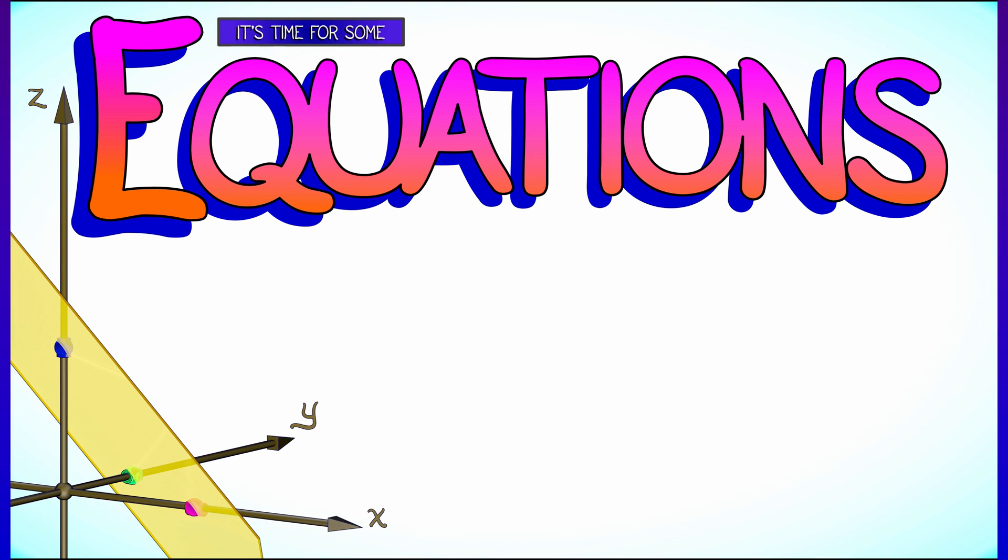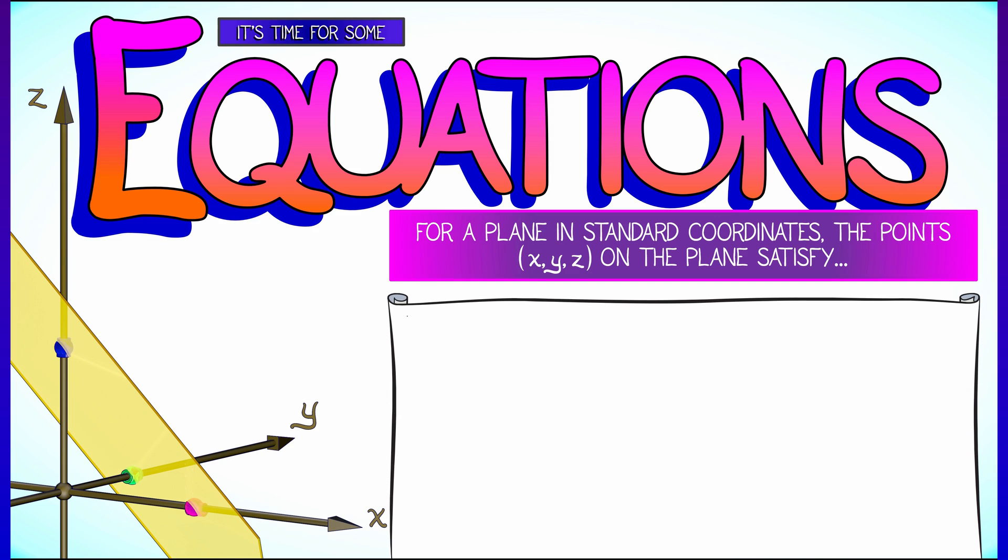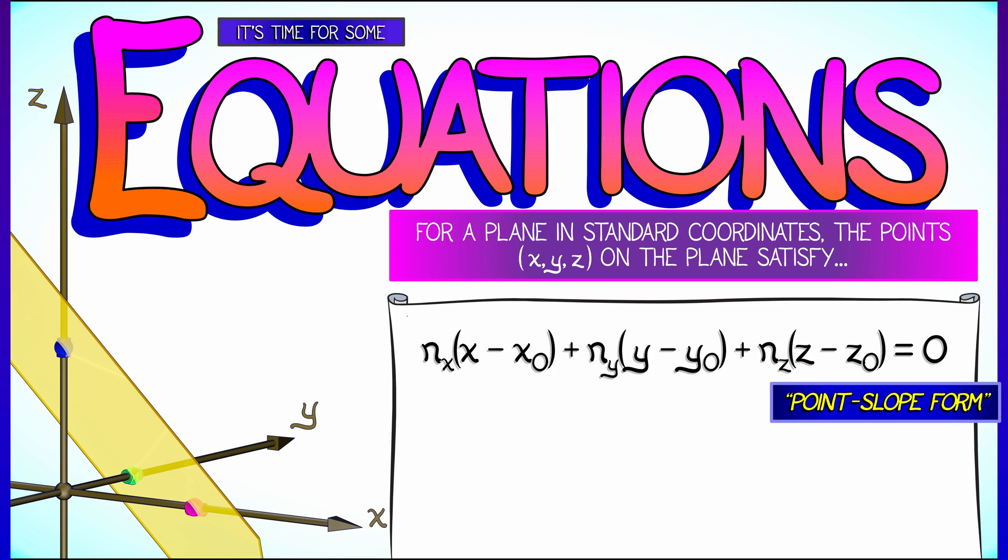Let's say that you've got standard x, y, z coordinates in three-dimensional space. Then, the equation of a plane that passes through a point with coordinates x-naught, y-naught, and z-naught, and has a certain type of slope (more on that later), is given by the point-slope form of that plane. That is, nx times quantity x minus x-naught plus ny times quantity y minus y-naught plus nz times quantity z minus z-naught equals zero.